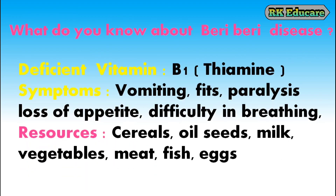What do you know about Beriberi disease? In Beriberi, the deficient vitamin is B1, also called thiamine. Symptoms include vomiting, paralysis, loss of appetite and difficulty in breathing. Cereals, oilseeds, milk, vegetables, meat, fish and eggs are the resources of vitamin B1.